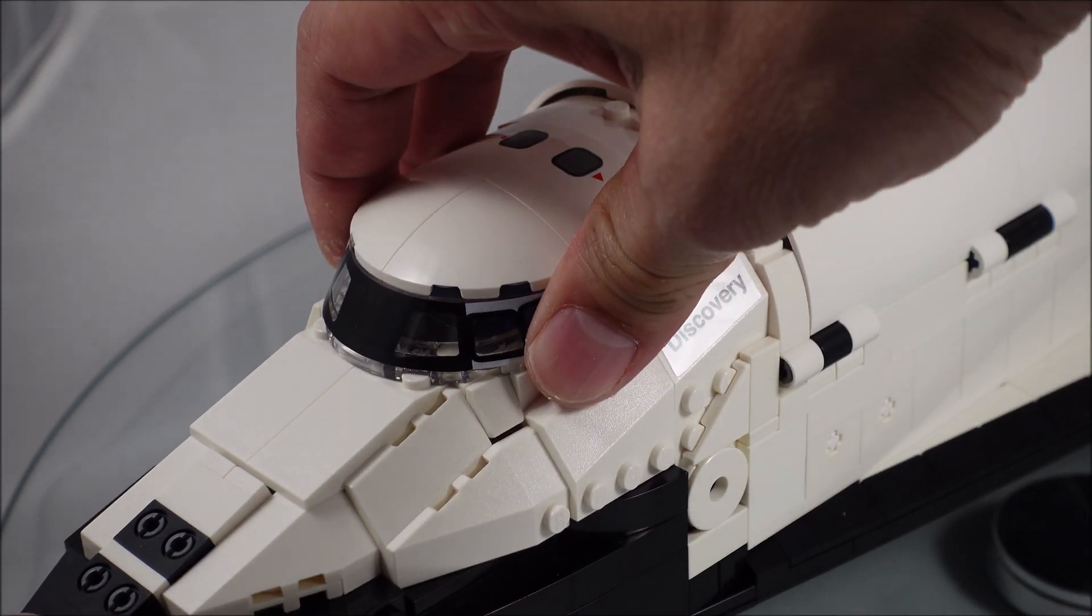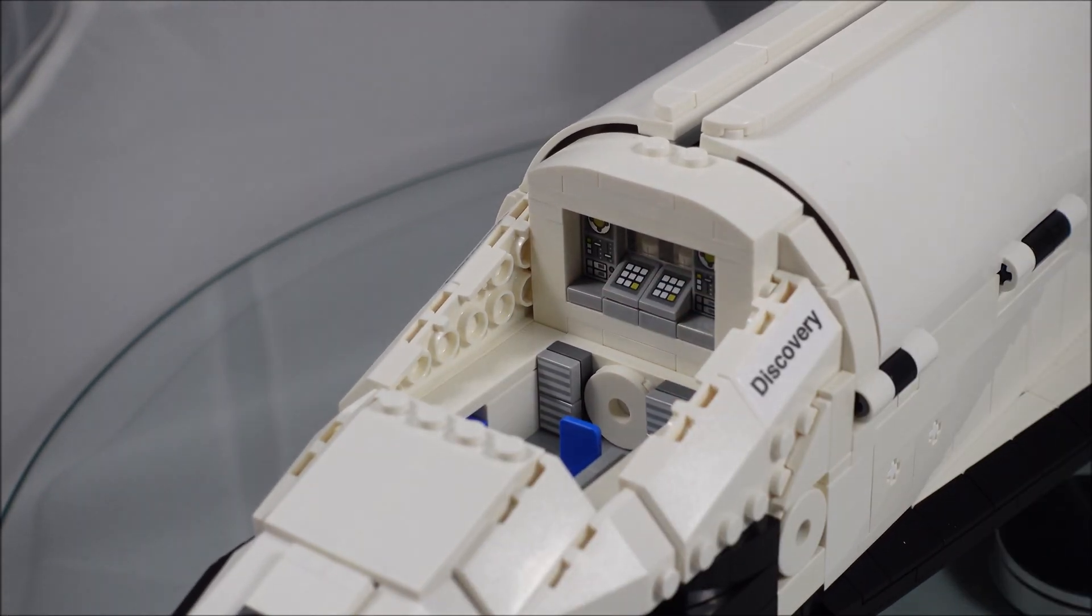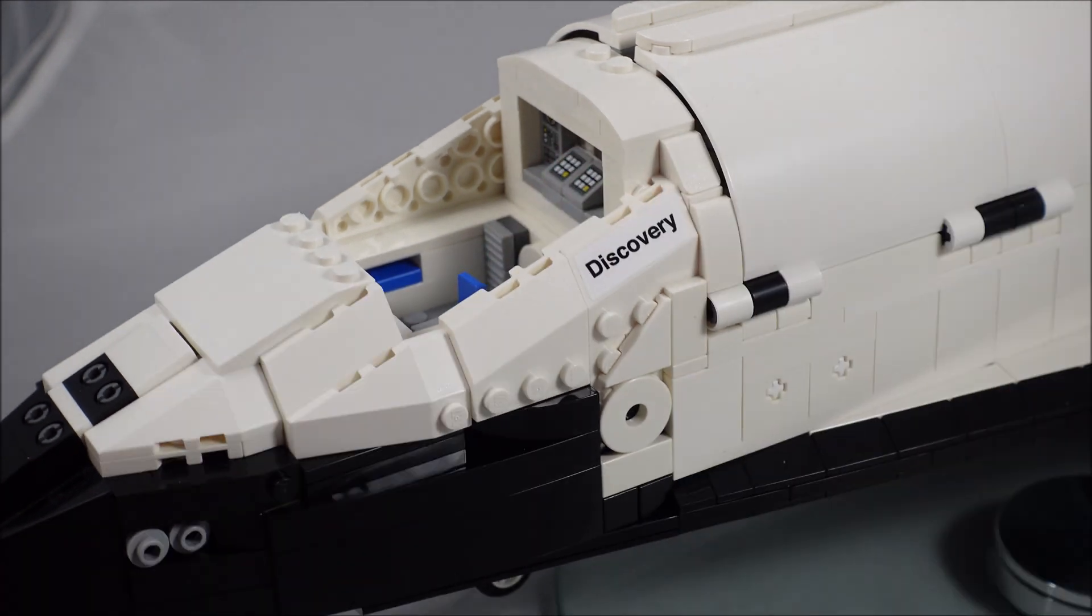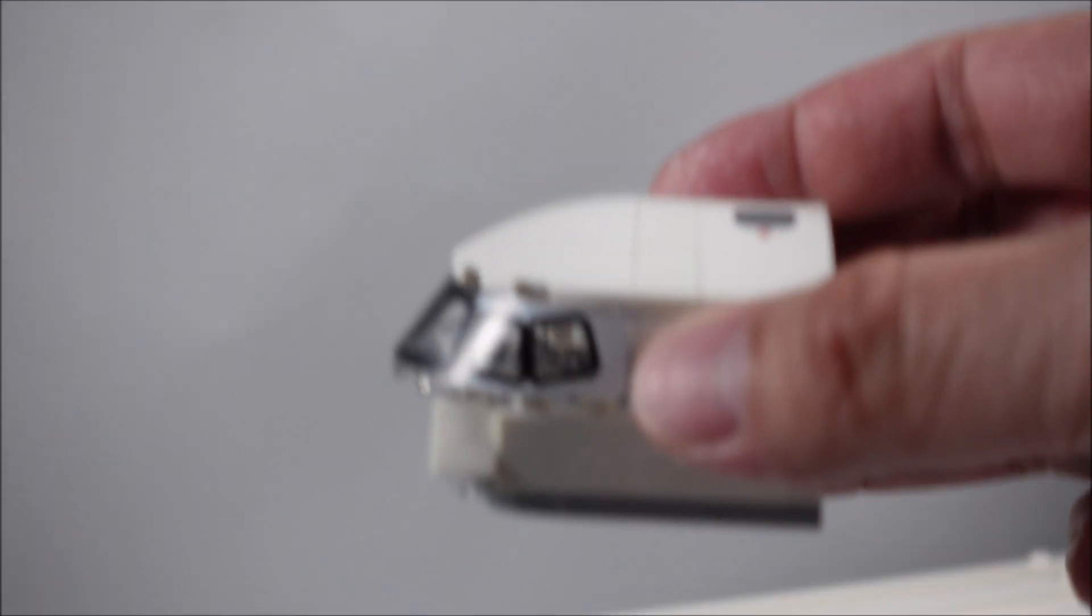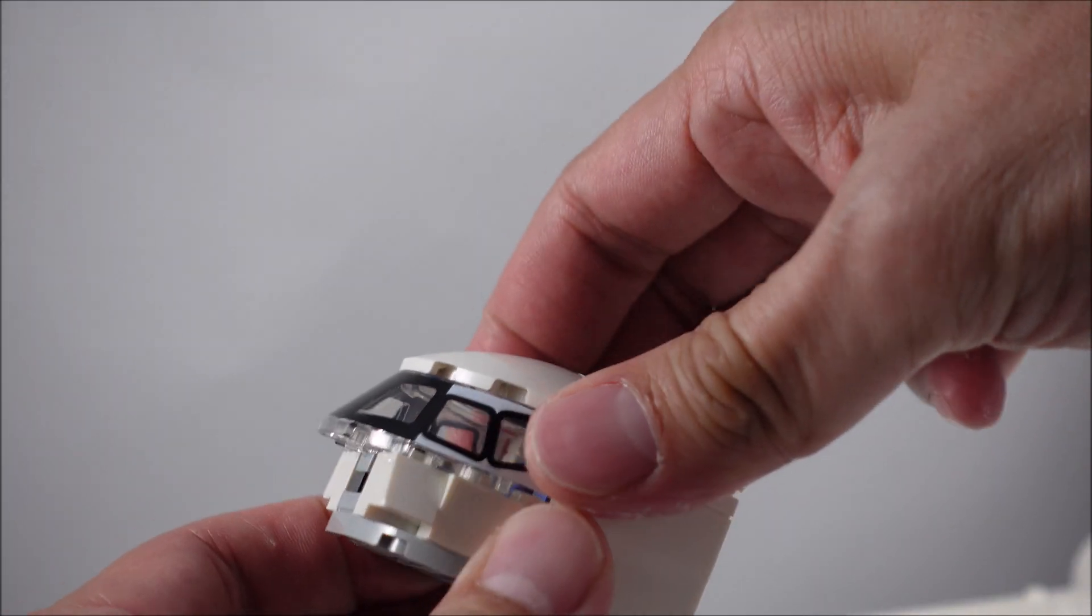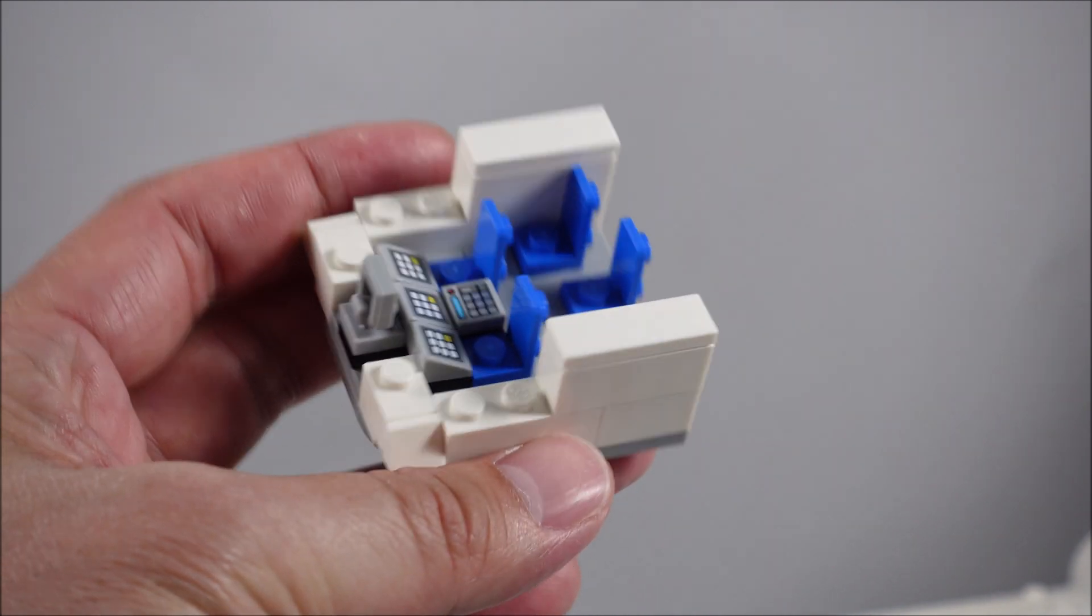But you need to sort of take off this bit here, and get a view of some of the new prints that they've got there, a single seat there. And then this piece, you pretty much need to take off this top part. And then you get the rest of the cockpit.